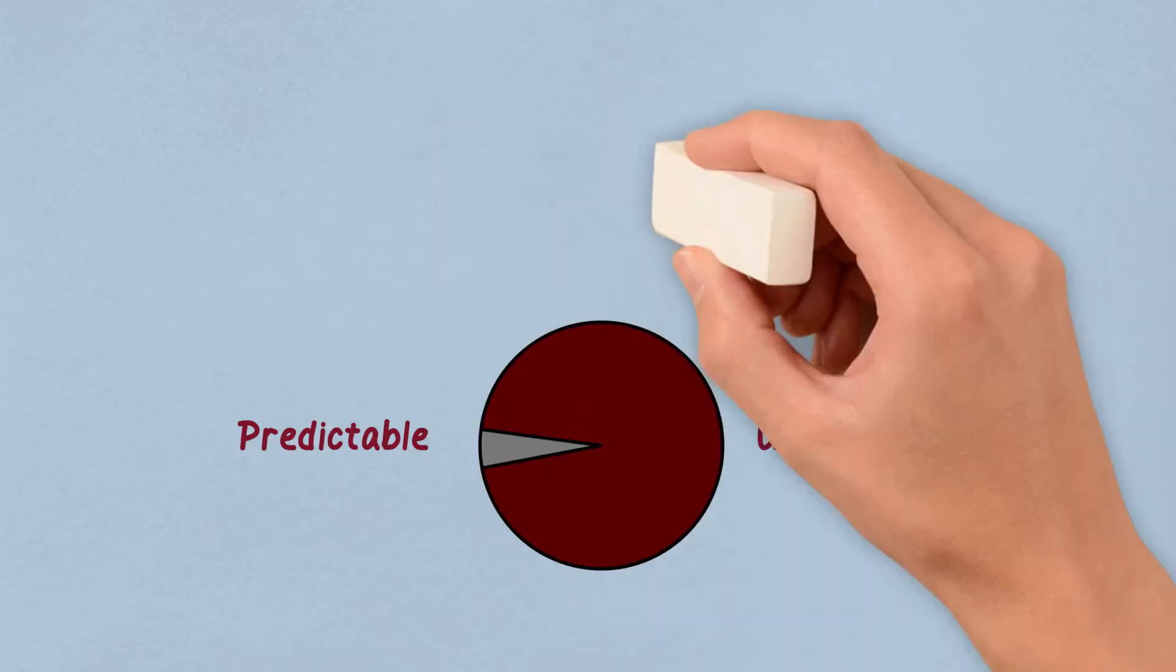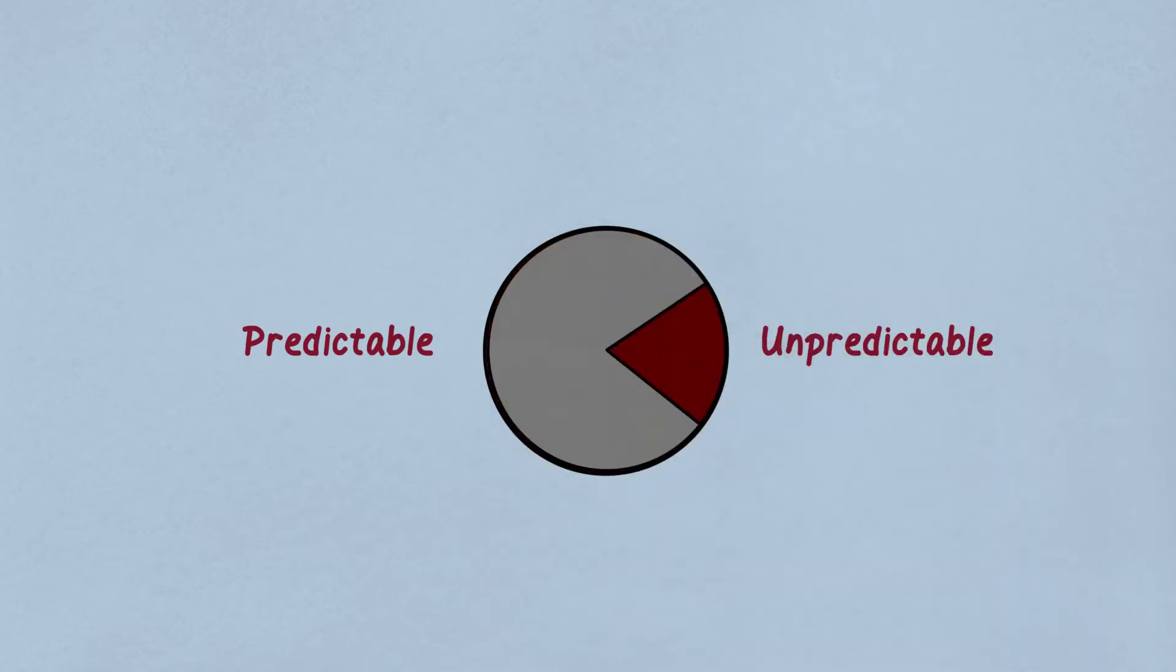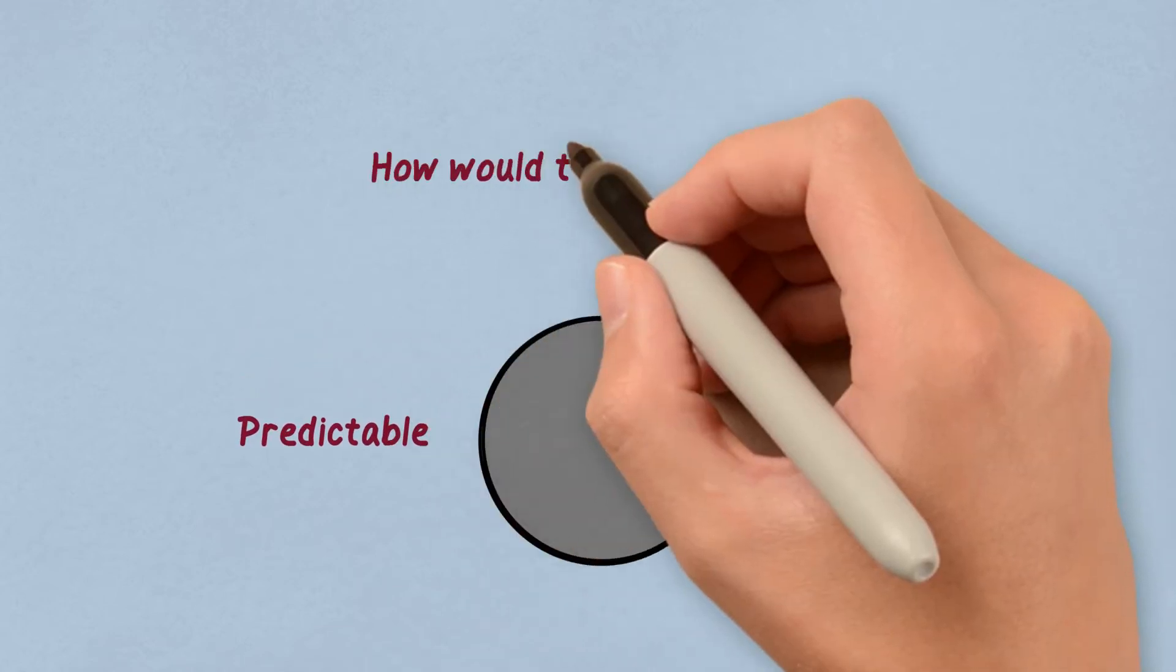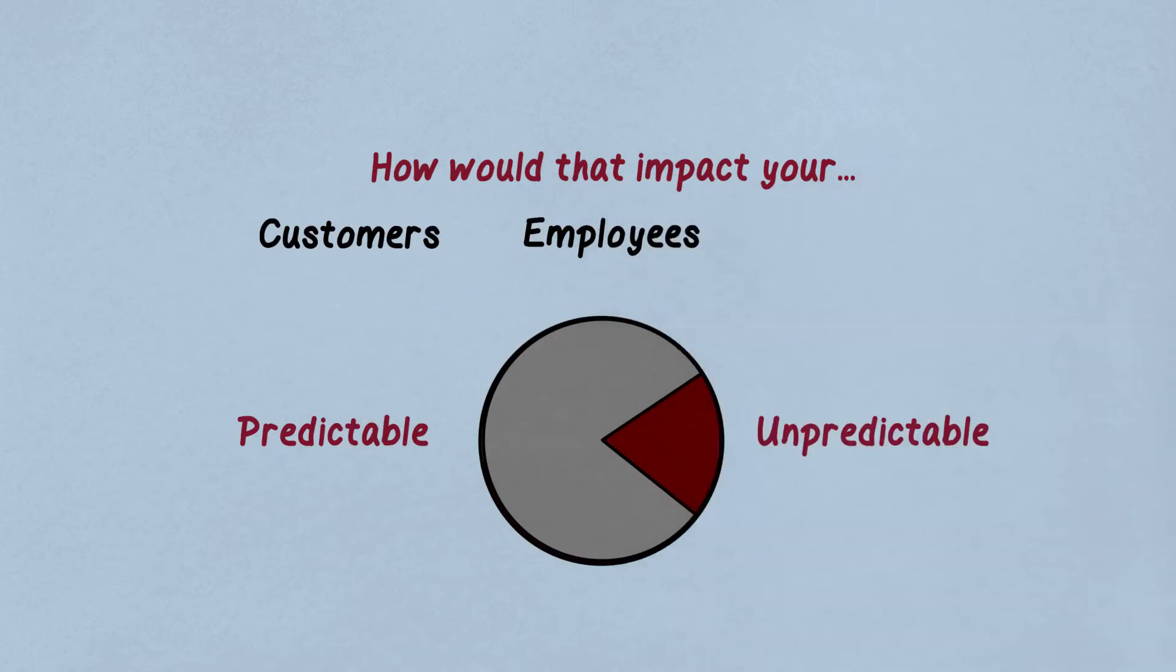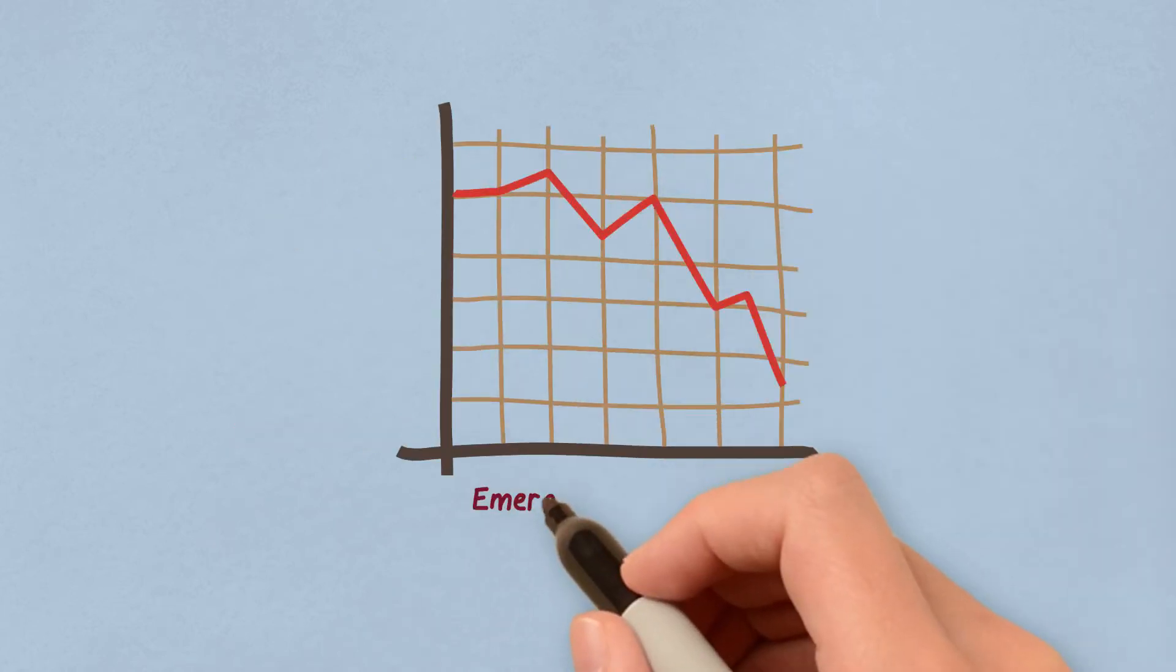But what if many of these currently unpredictable incidents could be moved to the predictable category? How would that impact your customers, your employees, your IT staff? How would it reduce emergency hardware purchases? How can you affect this shift?